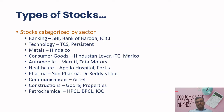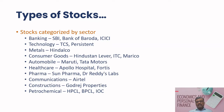Sectoral classification of stocks refers to categorizing stocks based on the industry or sector to which the companies belong. Each stock is associated with a specific sector that represents the primary area of business in which the company operates. This classification is useful for investors and analysts to understand the composition of their portfolios and assess the performance of different industries. Common sectoral classifications include metals, pharma, IT, FMCG (fast moving consumer goods), banks, healthcare, and others. You can find stocks belonging to these particular sectors on the slides.